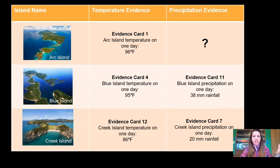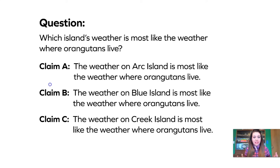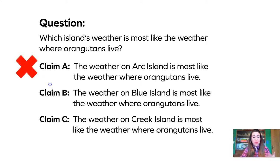Let's look at Arc Island first. We had evidence showing that Arc Island has a very hot temperature of 96 degrees Fahrenheit. If you think back to the temperature benchmarks, remember that chocolate melts at 93 degrees Fahrenheit — that means chocolate would definitely melt on Arc Island. But we didn't have any precipitation evidence for Arc Island, and that made it really difficult to compare. So do we have enough evidence to support Claim A? No, we don't. We have temperature data, but no precipitation data, so we can't possibly support Claim A.